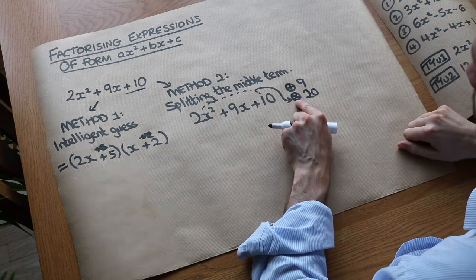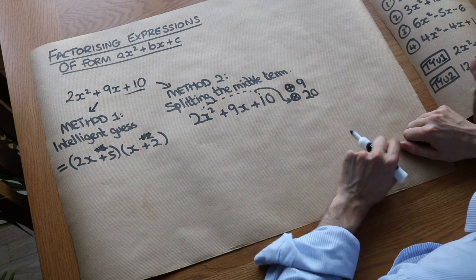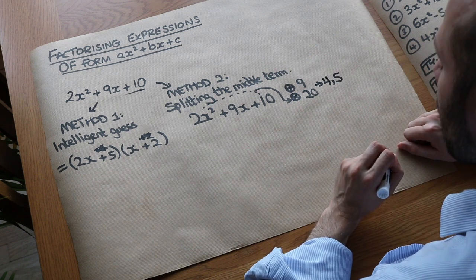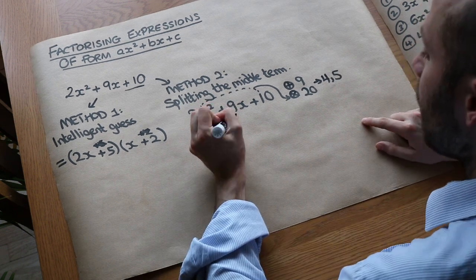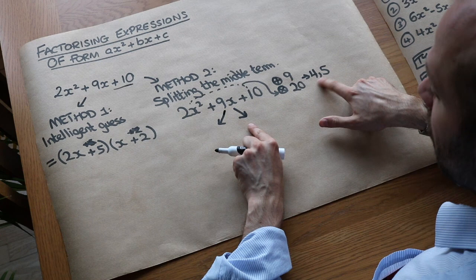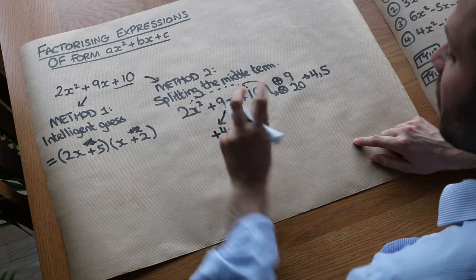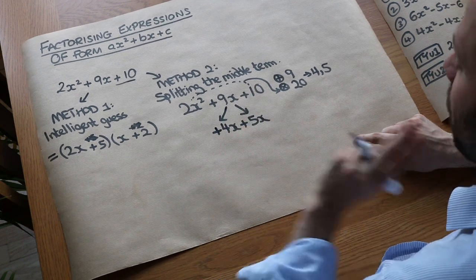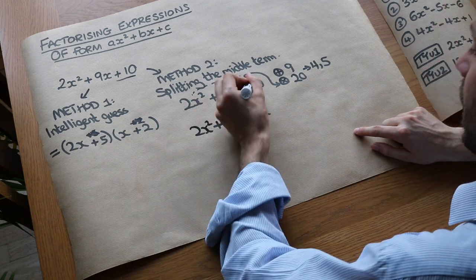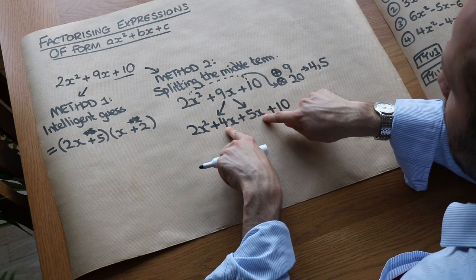So we need to find two numbers which add to give 9 and multiply to give 20. Numbers that multiply to give 20: 10 and 2 don't add to give 9, but 4 and 5 do add up to give 9. So we use 4 and 5. We split that middle term using these two numbers — into plus 4X and plus 5X. It doesn't matter which way round you put those two numbers, you'll end up with the same final answer. We've still got the 2X squared and the plus 10, so the expression is exactly the same except we split that middle term into two terms.